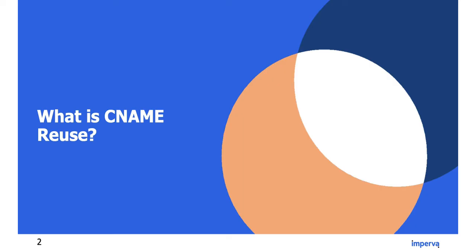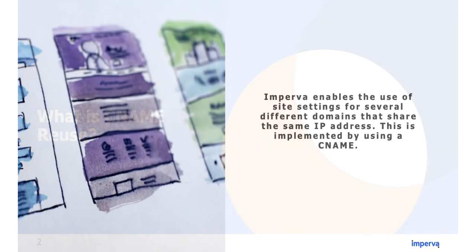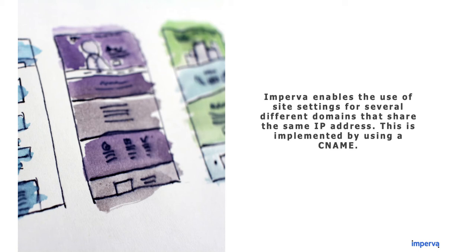So what is CNAME reuse? Imperva enables the use of site settings for several different domains that share the same IP address. This is implemented by using a CNAME. Using a CNAME is the most common way to symlink one DNS record to another. Queries asking for a specific destination are referred by domain name to the target destination, which may be located somewhere else on the internet. This setup is called CNAME reuse.